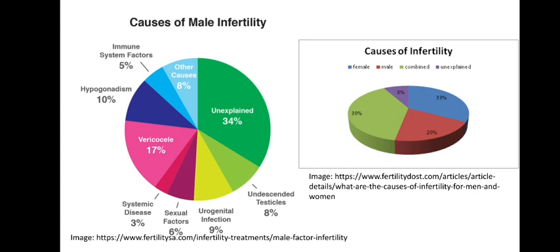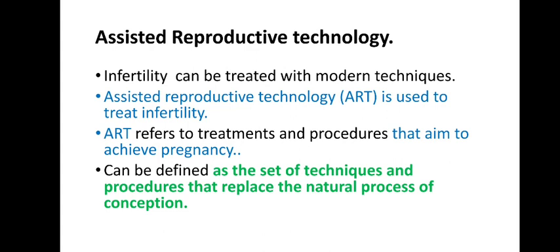Assisted Reproductive Technology, also known as ART, is a treatment for infertility. It refers to the treatment and any procedure that aims to achieve pregnancy. It can be defined as the set of techniques and procedures that replace the natural process of conception — when a couple is unable to naturally reproduce, certain techniques and procedures can assist those couples to conceive or have babies.